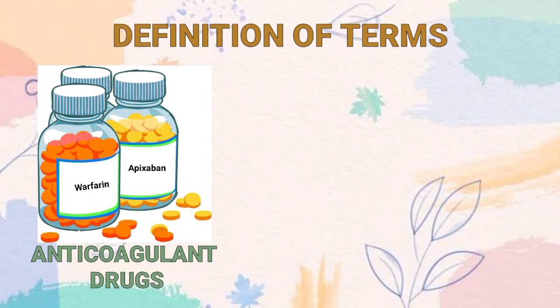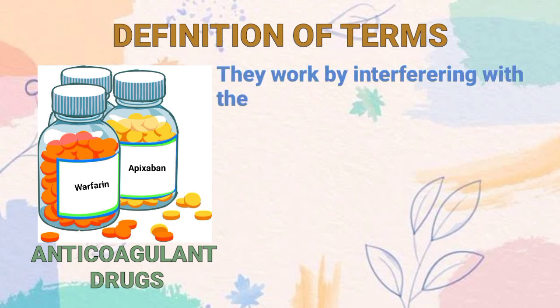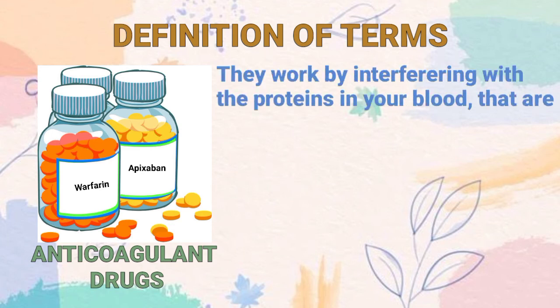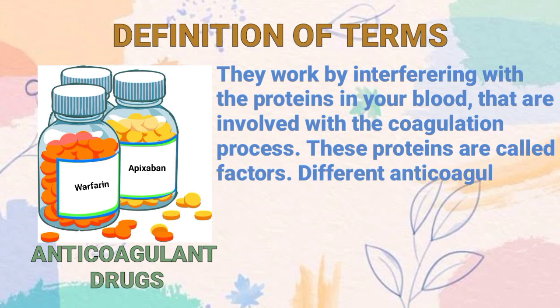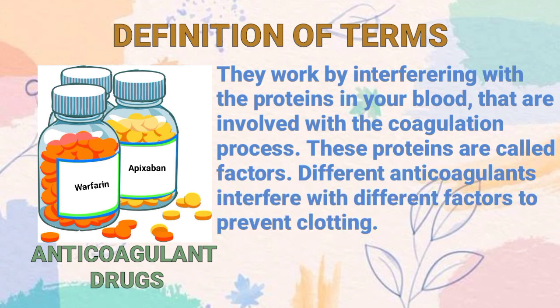Anticoagulant drugs work by interfering with the proteins in your blood that are involved with the coagulation process. These proteins are called factors. Different anticoagulants interfere with different factors to prevent clotting.